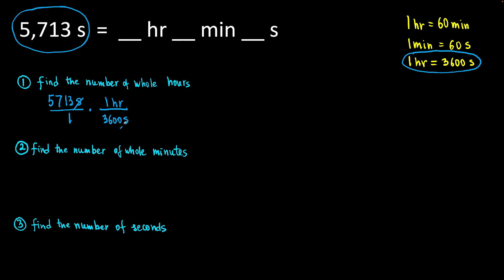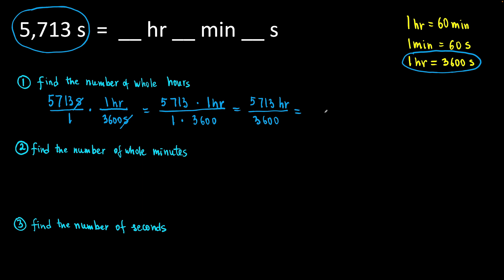We see that seconds cancel out and we are left with hours. We are dividing — we have 5713 times 1 hour over 1 times 3600. So, basically, we are dividing. Let's divide 5713 by 3600. Using a calculator, we get 1.586944444 hours. So, we can see that we have 1 whole hour. We'll put 1 right here.